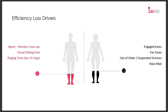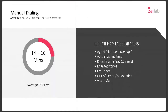We need to get maximum productivity out of every hour, otherwise the cost per minute or per interaction becomes exorbitant. Looking at efficiency loss drivers: the actual time taken by agents to look up numbers, dialing time, ring time, engaged tones, fax tones, out of order tones, encountering voicemail and answering machines — all of these reduce the time an agent can actually engage with a customer. With manual dialing, between 14 and 16 minutes is the very best we could hope for out of every hour.